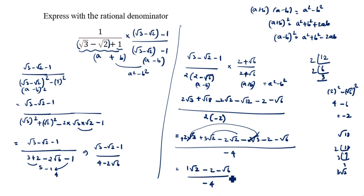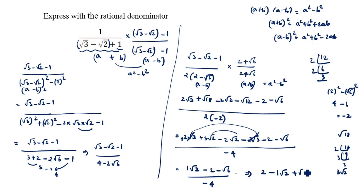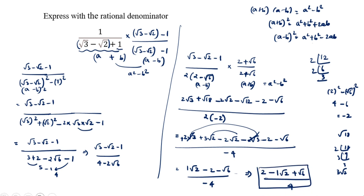Since there is a minus sign in the denominator, we change the signs of the numerator. The final answer is 2 minus root 2 plus root 6 divided by 4. Thanks for watching this video.